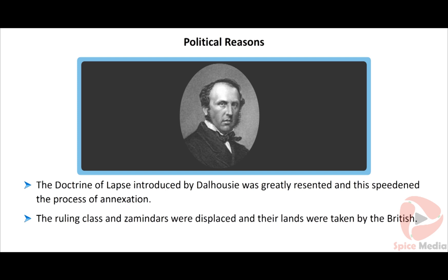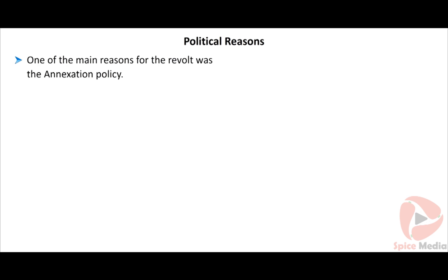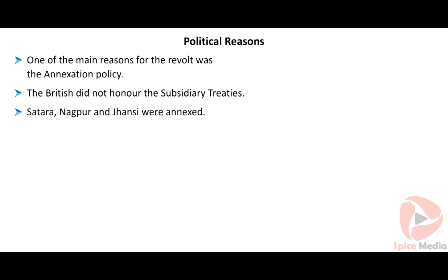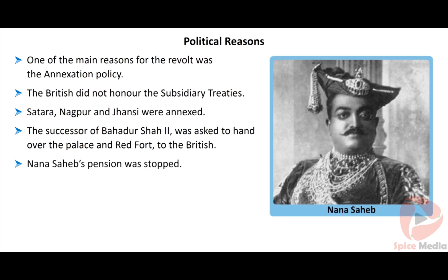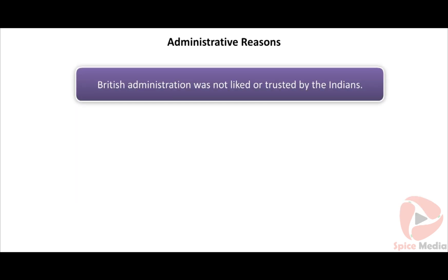The British refused to allow kings to adopt a child and annexed their kingdoms. The ruling class and zamindars were displaced and their lands were taken. The British did not honor subsidiary treaties signed with Indian rulers. Satara, Nagpur, and Jansi were annexed. The successor of Bahadur Shah II was asked to hand over the palace and the Red Fort. Nana Sahib, adopted son of Peshwa Baji Rao II, had his pension stopped, which enraged him. The policies of the British also deprived Muslims of their political power.